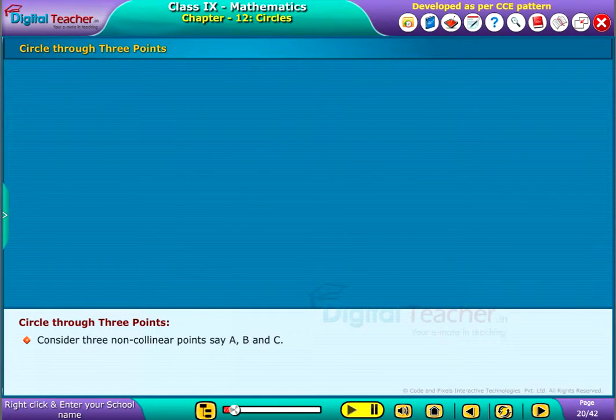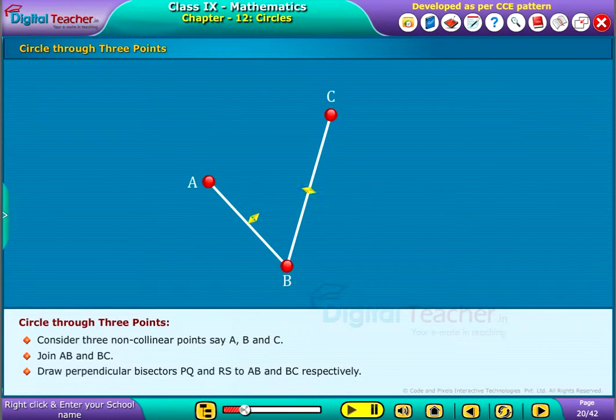Consider three non-collinear points say A, B and C. Join AB and BC. Draw perpendicular bisectors PQ and RS to AB and BC respectively.